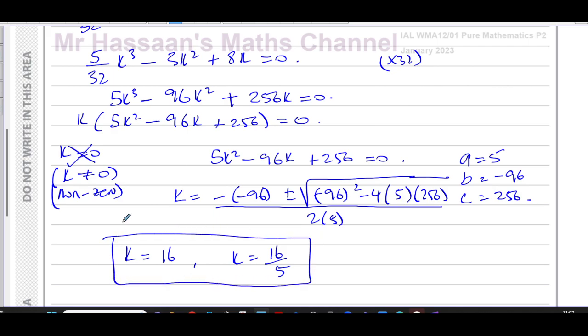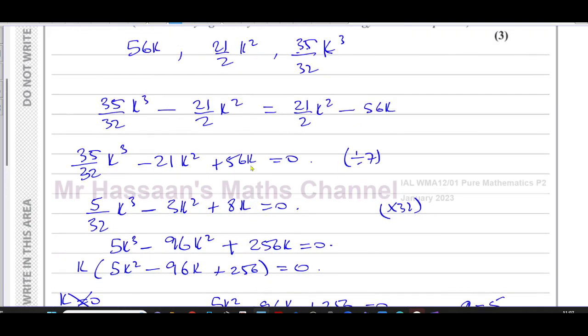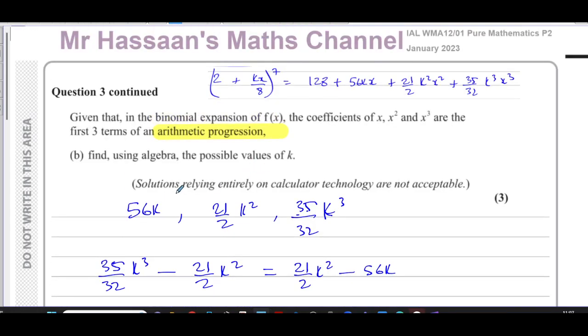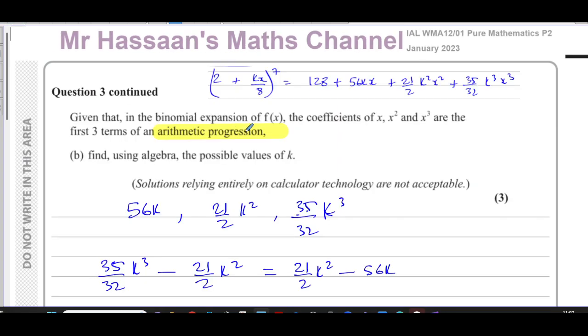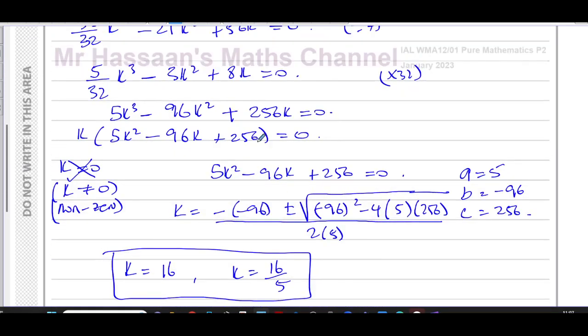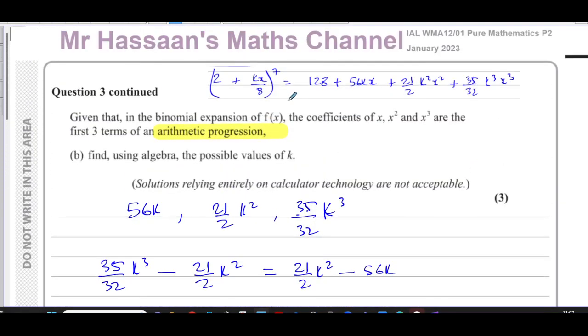Which satisfy this equation that we formed from the fact that the x, the k squared and the x cubed terms are all in arithmetic progression. So that concludes question number three from this January 2023 Pure Mathematics P2 paper.